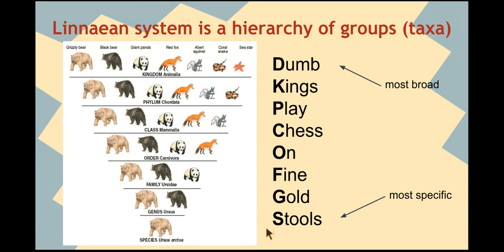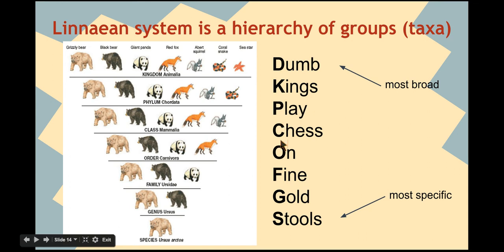In order to memorize the taxa — because you do have to memorize them — here's a trick: come up with a mnemonic device, or feel free to use mine. Mine is: 'Dumb kings play chess on fine gold stools.' Each letter represents one of the levels — D: domain, K: kingdom, P: phylum, C: class, O: order, F: family, G: genus, S: species.